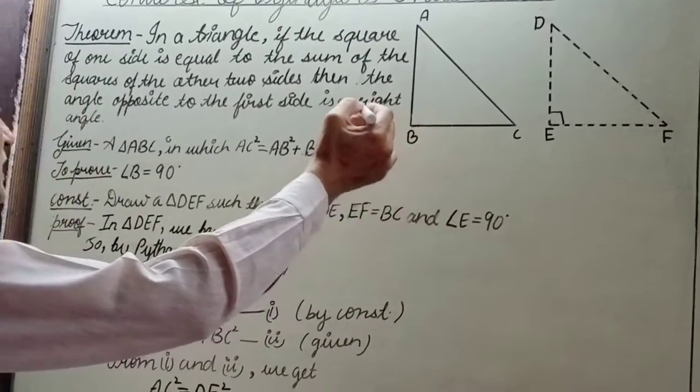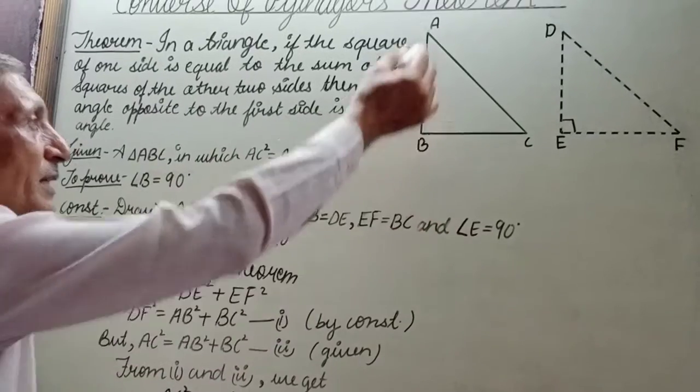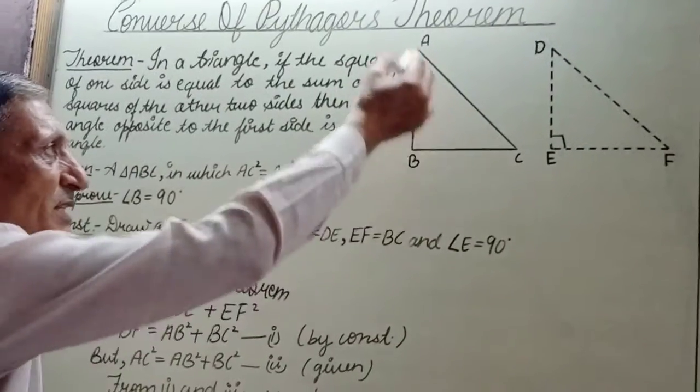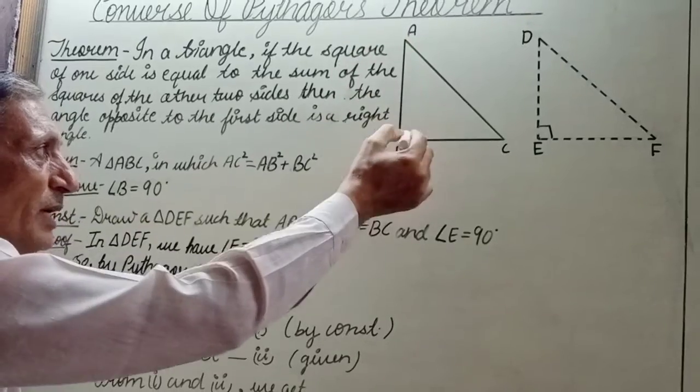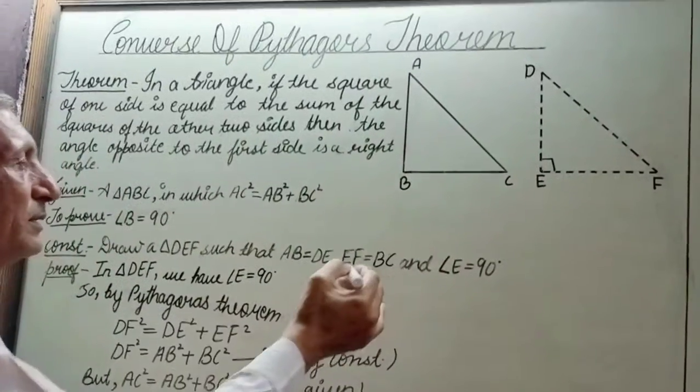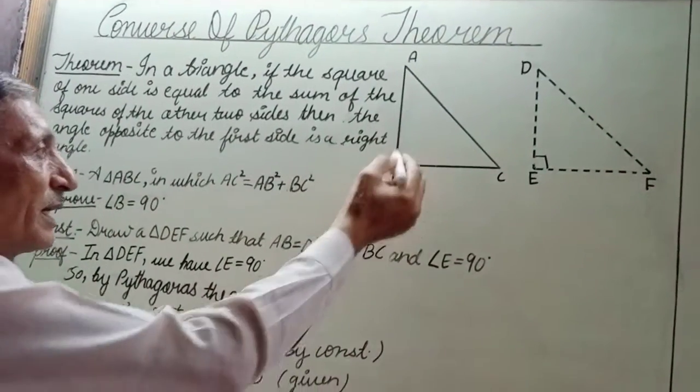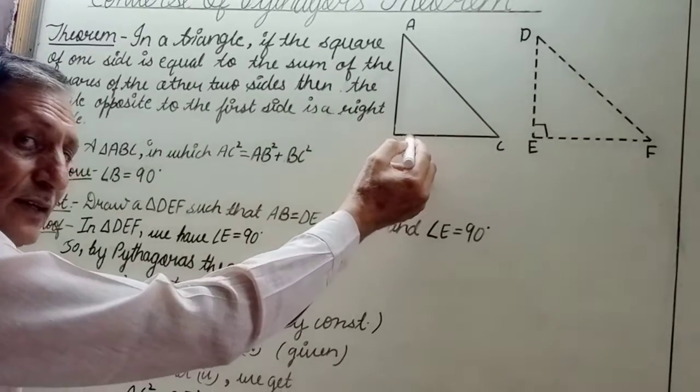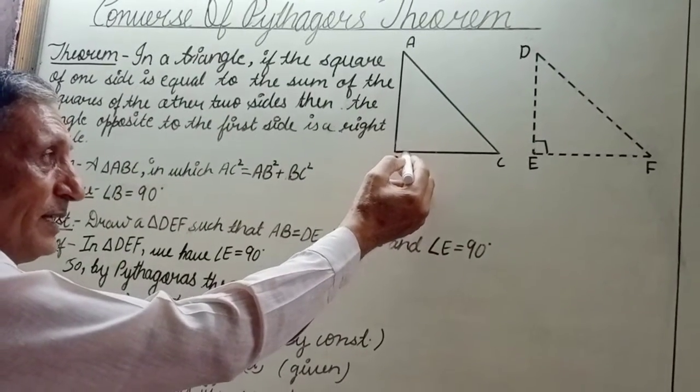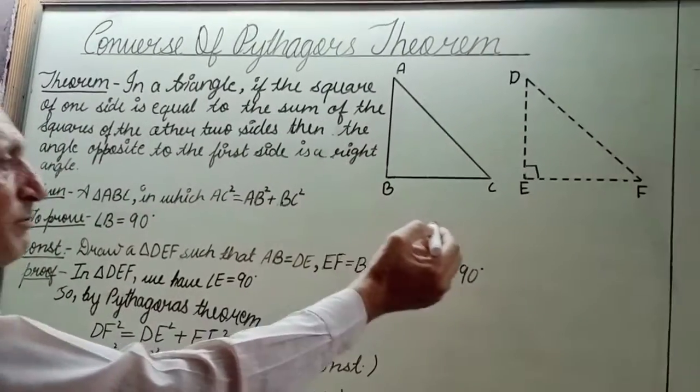Okay. Given: a triangle ABC in which AC² = AB² + BC². To prove: angle B is a right angle, angle B = 90 degrees. We have to construct.